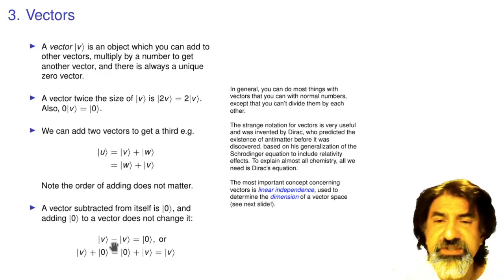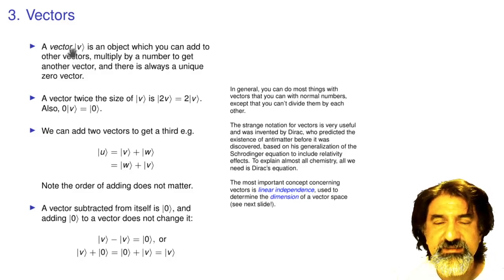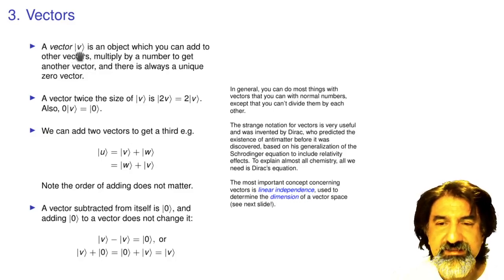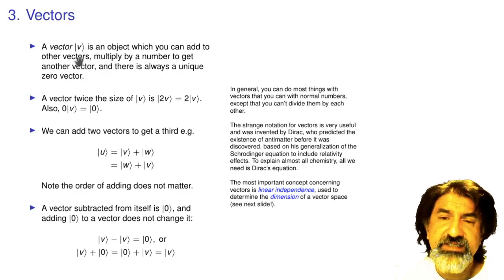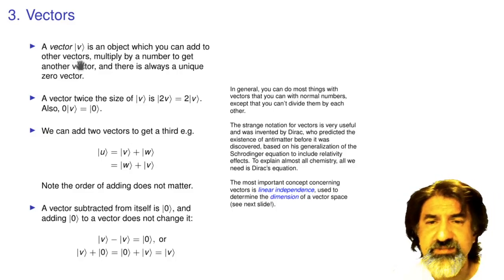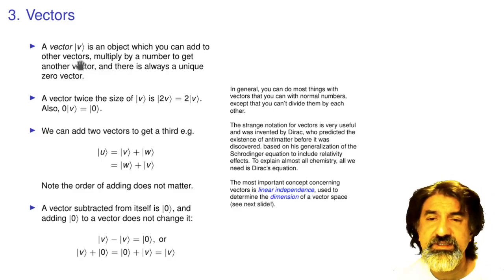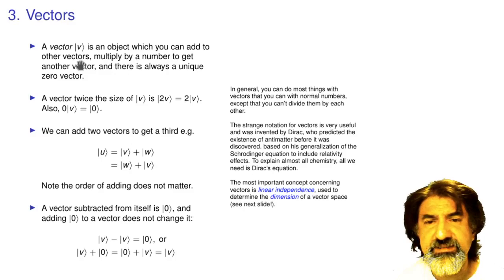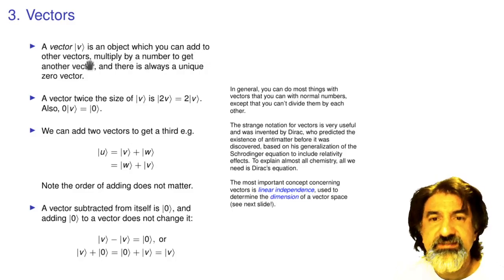What is a vector? We'll use Dirac's bra-ket notation. A vector v is written as a ket — the symbol |v⟩, with a line and a right-pointing bracket. There's also a bra, ⟨v|, where the bracket points left. This notation was invented by Dirac. Vectors are sometimes written bold or with an arrow on top, but in quantum mechanics we use this bracket notation, which is more general.